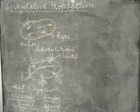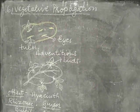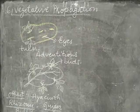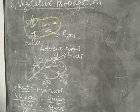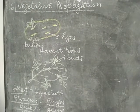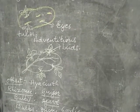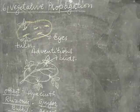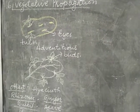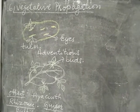Hello everyone. Today is our third day class. Yesterday we were discussing some methods of asexual reproduction. In the last class we discussed some methods of sexual reproduction. We discussed five methods: fission, budding, fragmentation, regeneration, and spore formation.